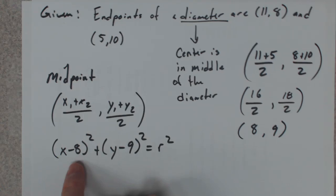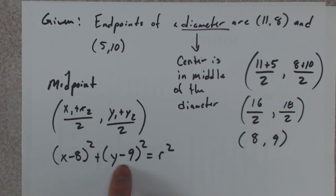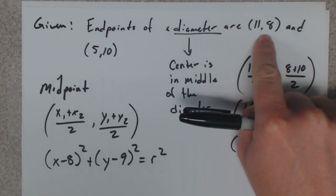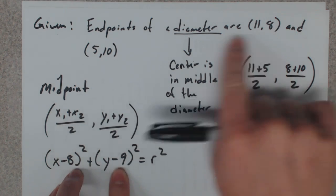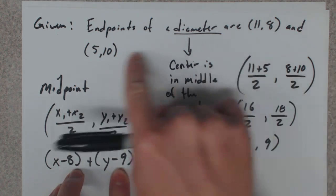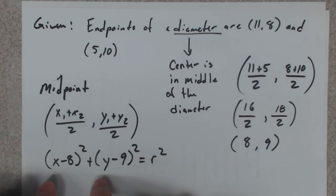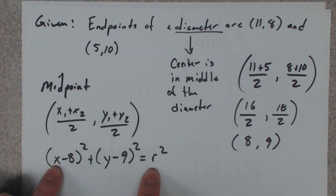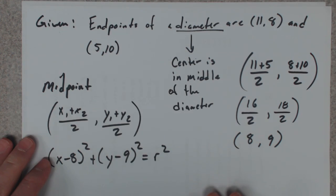We did a question previously where you were given the center and one point was on the circle. I have the center and two points that are on the circle. So you pick either point you want, plug it in for x and y, and it will tell you what the r² value is. I'm going to use the 5 and the 10.